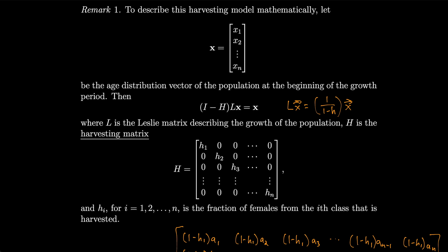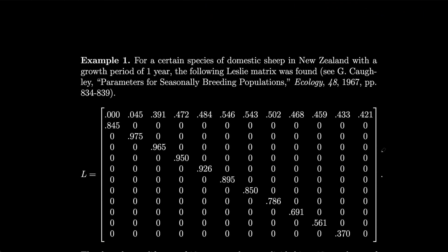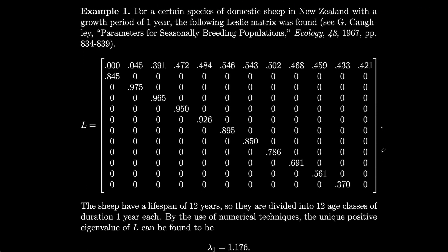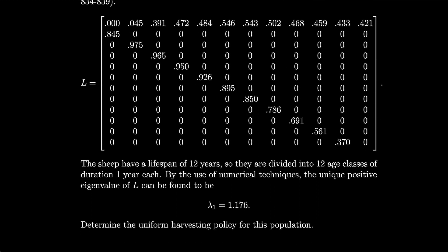Let's do an example. For a certain species of domestic sheep in New Zealand with a growth period of one year, the following Leslie matrix was found. The sheep have a lifespan of 12 years and are divided into 12 age classes of duration one year each. By numerical techniques, the unique positive eigenvalue of L was found to be lambda_1 equals 1.176.